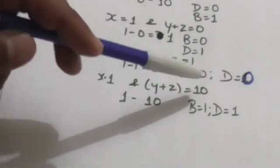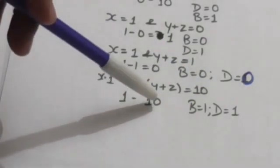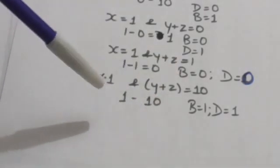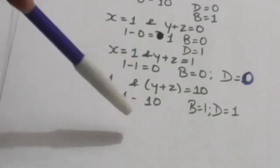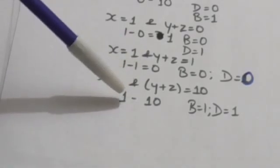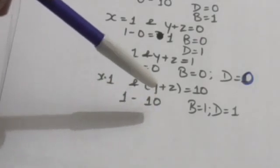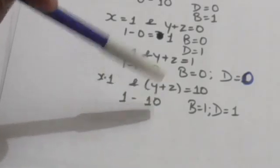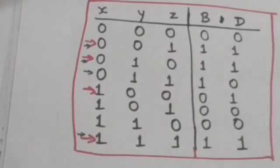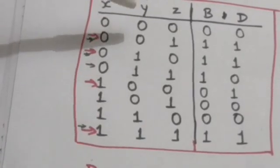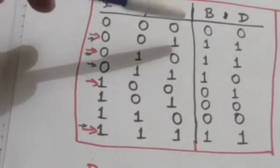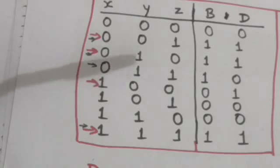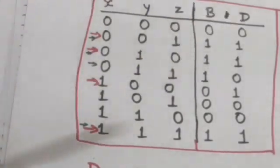When X equals 1 and Y plus Z equals 10 in binary (decimal value 2), X is smaller than Y plus Z so we need to borrow 1, making B equal to 1. The current value of X is 1; when we borrow 1, it becomes 3, and 3 minus 2 equals 1, so D equals 1. When Y plus Z equals 1 and X equals 0, B equals 1 and D equals 1.